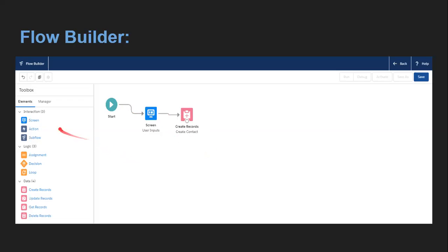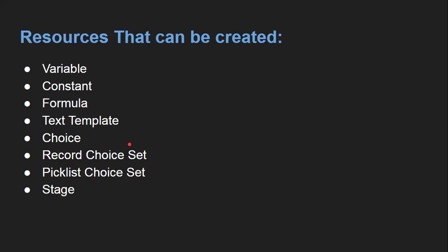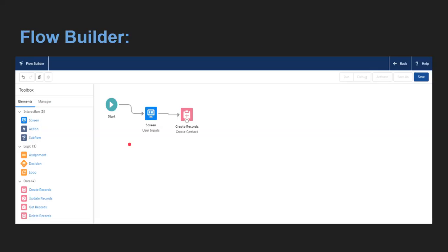If you click on the Manager tab, you will see all the resources you can create to support your flow elements. At the top right corner, you can see the options: Run, Debug, Activate, Save As, and Save.